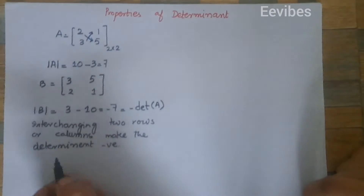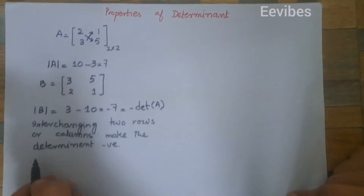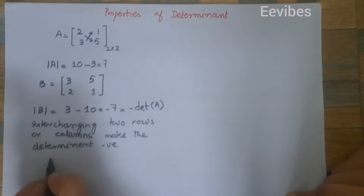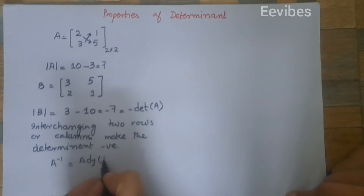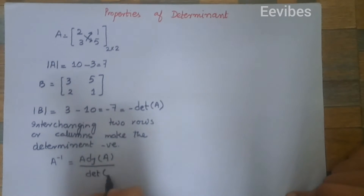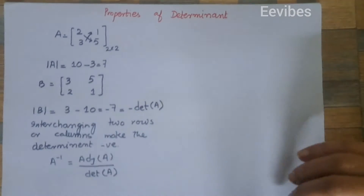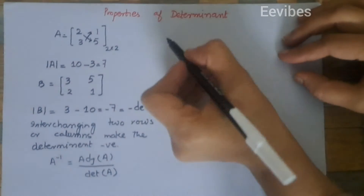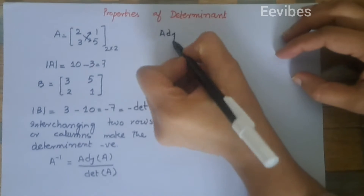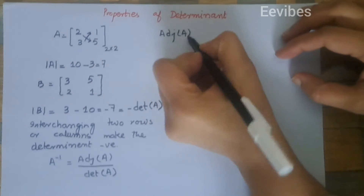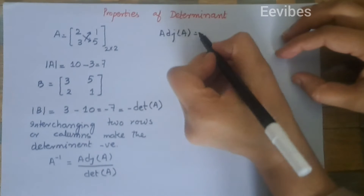Now let's find the inverse of A. To find the inverse of a two by two matrix we can use the formula: adjoint of A divided by the determinant of A. For finding the adjoint of A, we swap the diagonal entries of the matrix.